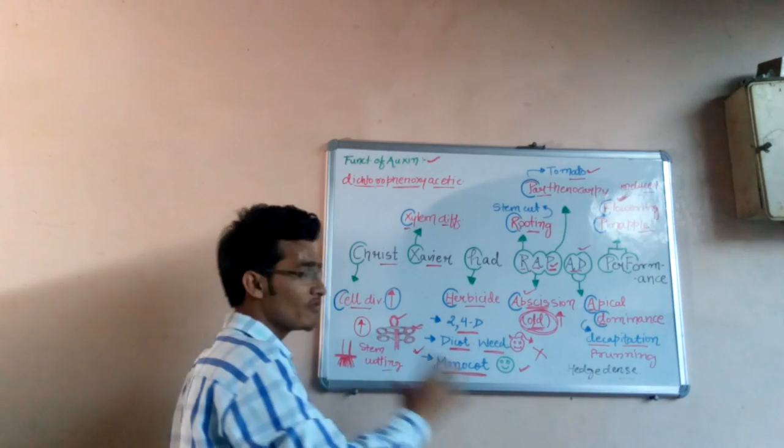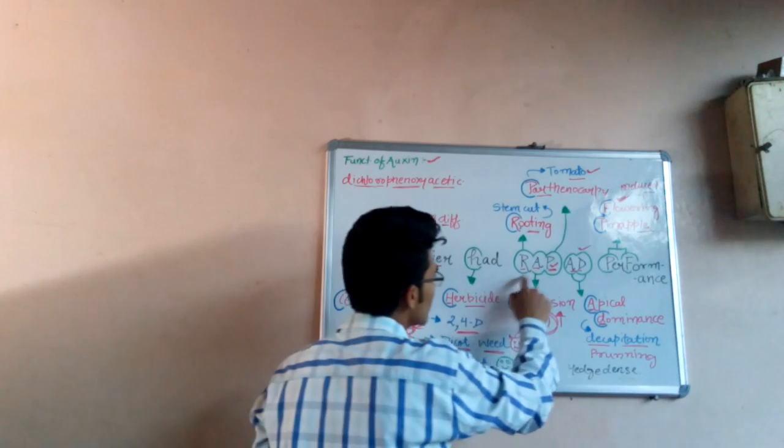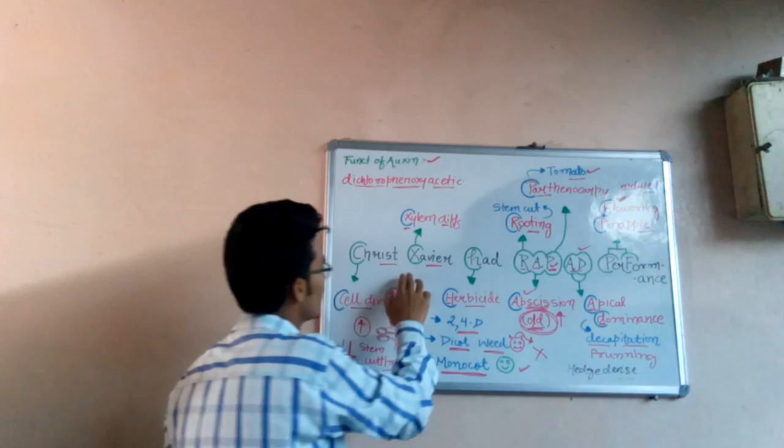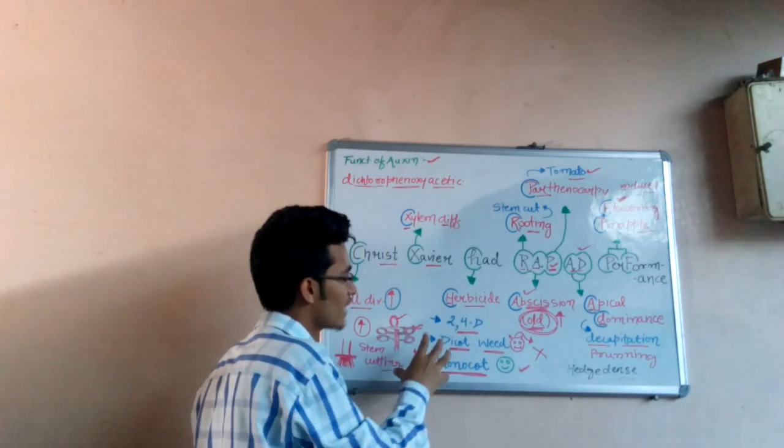So this is a very simple trick. We would revise it again so that it can be memorized easily by us. Chris Xavier had rap ad performance. C means cell division. X means xylem differentiation. H means herbicide, which is 2,4-D, which kills dicot weeds but not the monocot ones.